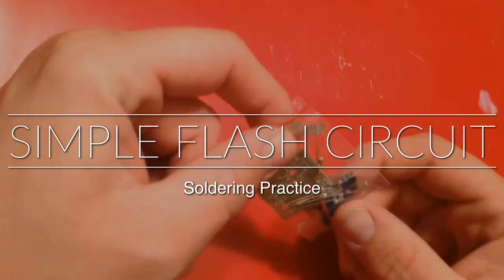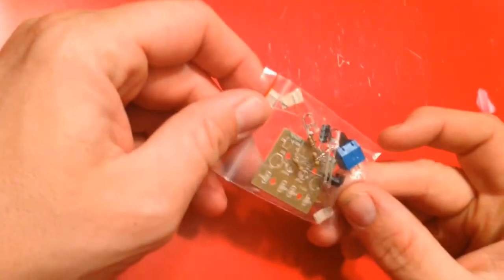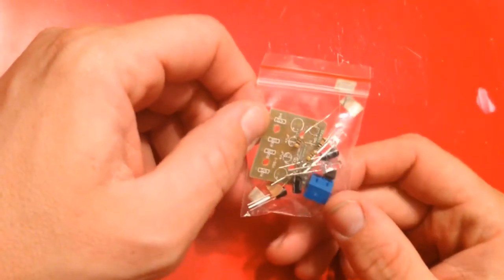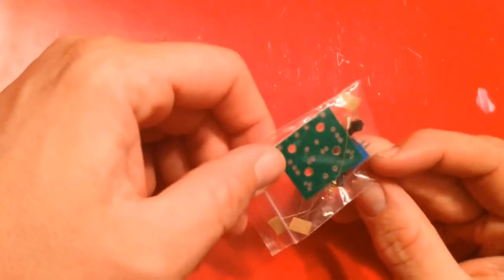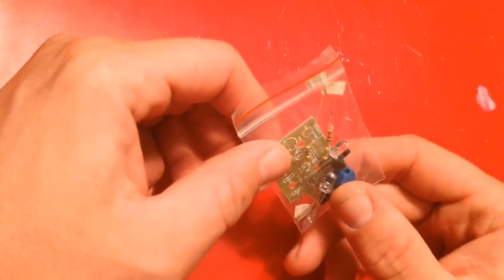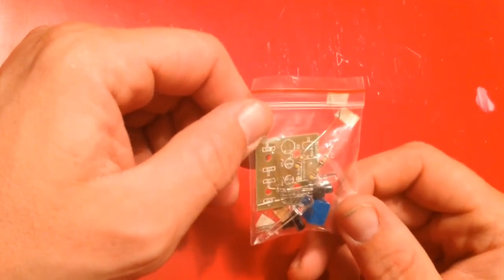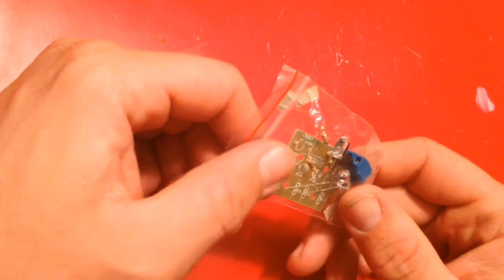This is the little flasher circuit that I'm looking to put together. I got it on eBay for less than a dollar. I think you can get a bunch of these, probably for two or three dollars. I'm not sure what you would use it for, but it's good practice for me.